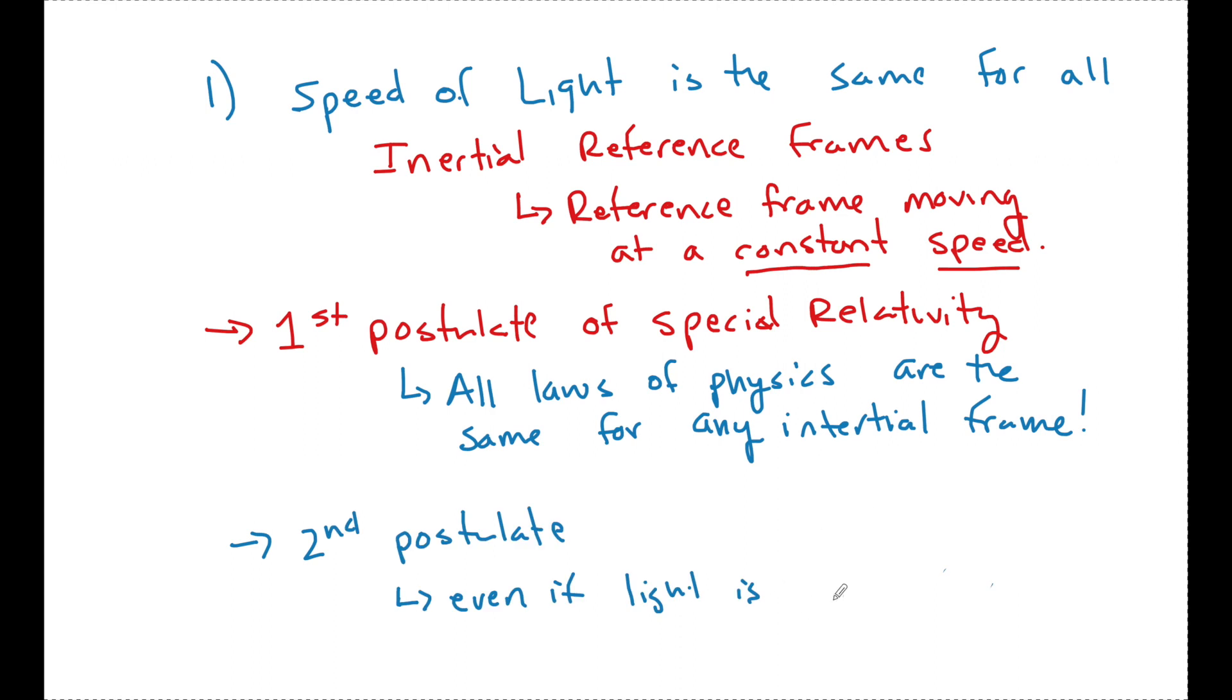And what we just spoke about earlier is the second postulate. And what it says is even if light is emitted from a moving source, it only travels the speed of light. So what you really need to take away from this is if you see there's a moving light source, what you need to know is that even though the light is coming from a moving light source, it's still only going to travel C.